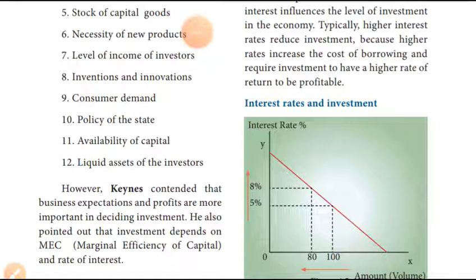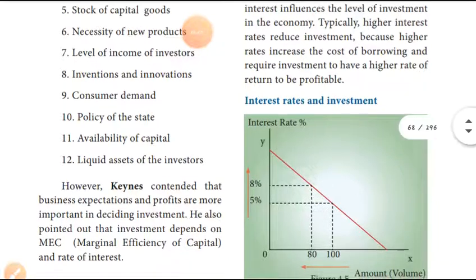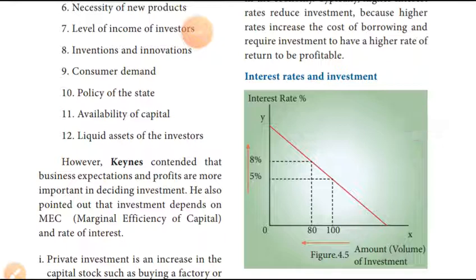Point 8 relates to the market. How will the market perform? If you look at the market, you are going to buy investment goods. The market will sell investment goods and you will buy investment. Point 9: consumer demand is one of the most important determinants of investment.